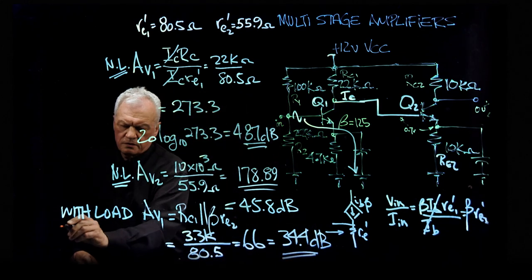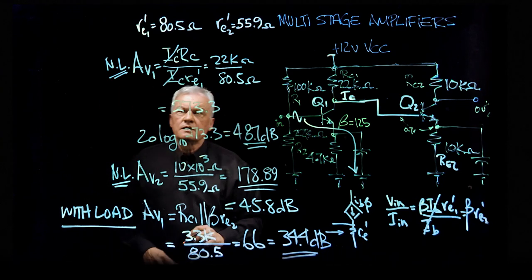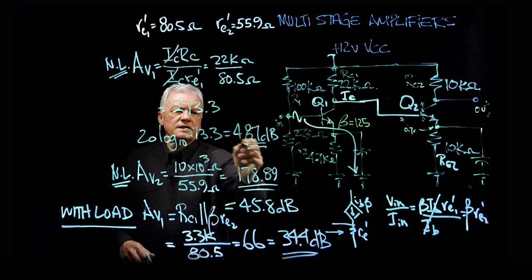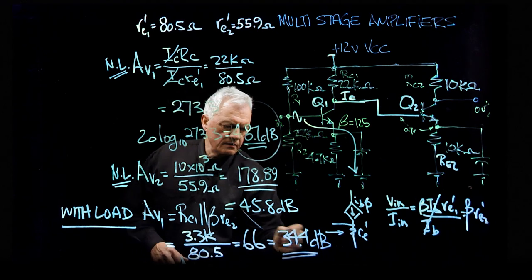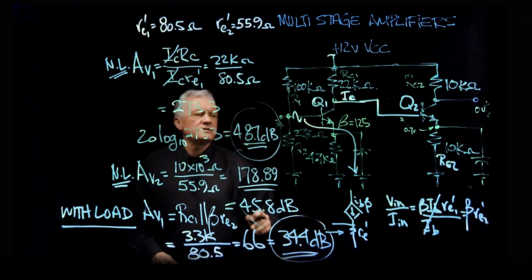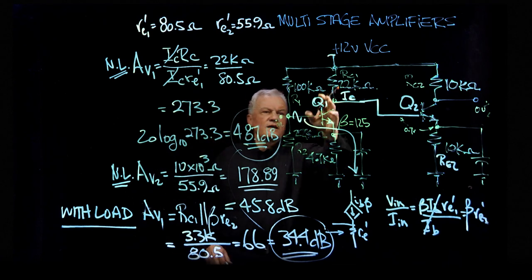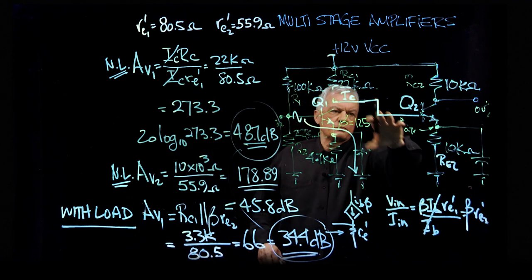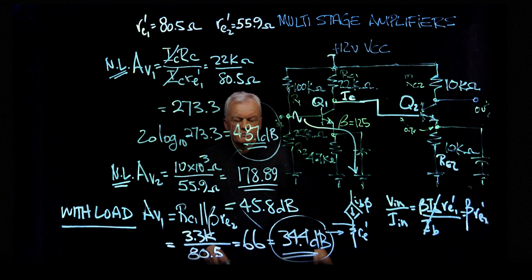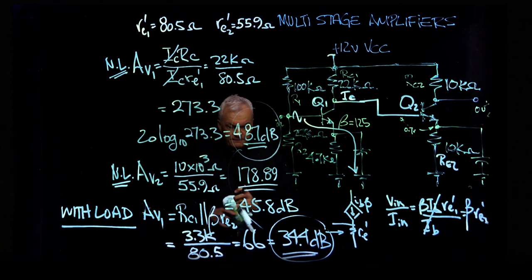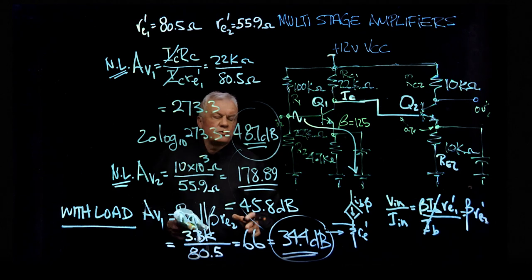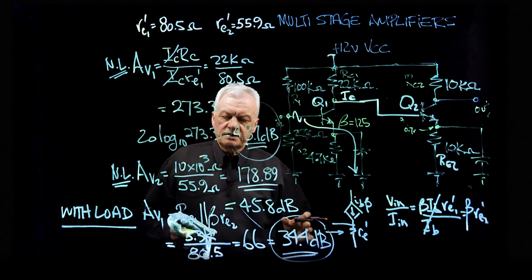So with the load, we managed to change the gain from 48.7 down to this, because we are now connected, and current is going through here, but it's also taking an alternate path through that part over there. So a pretty good story.